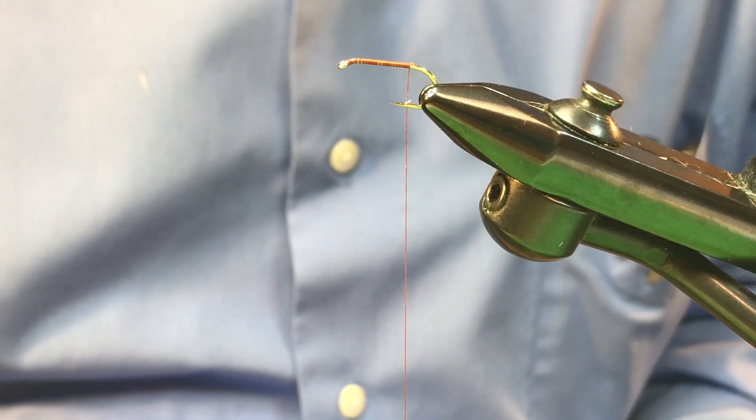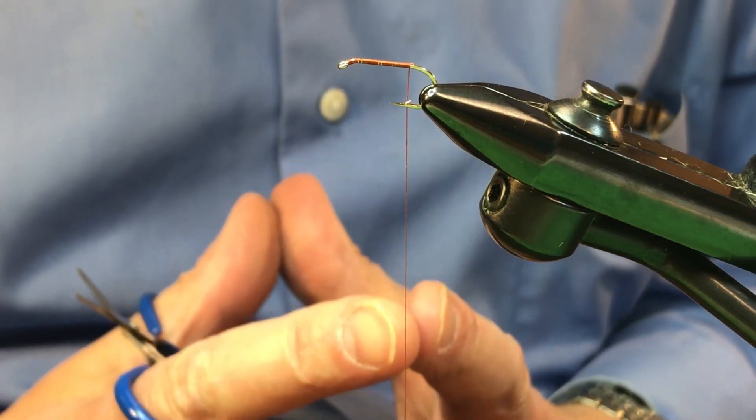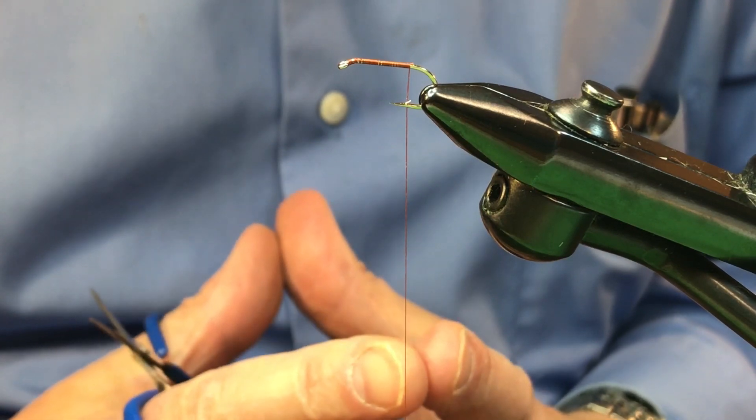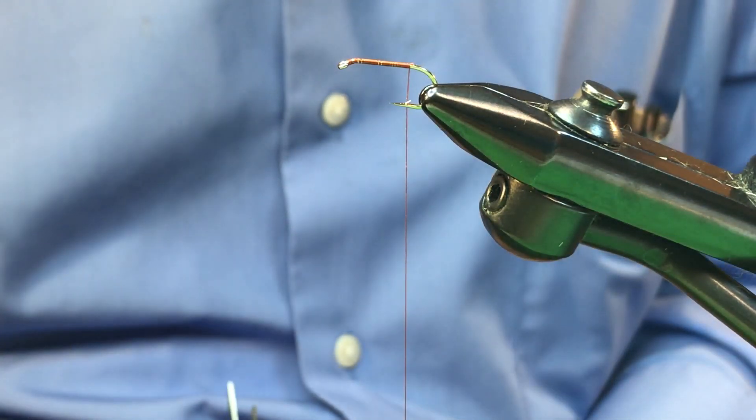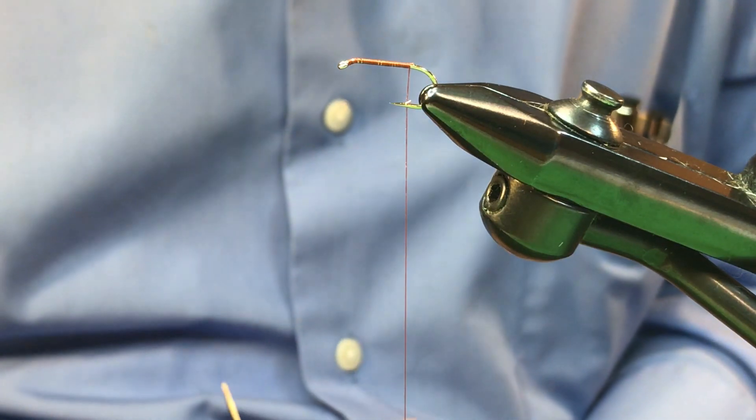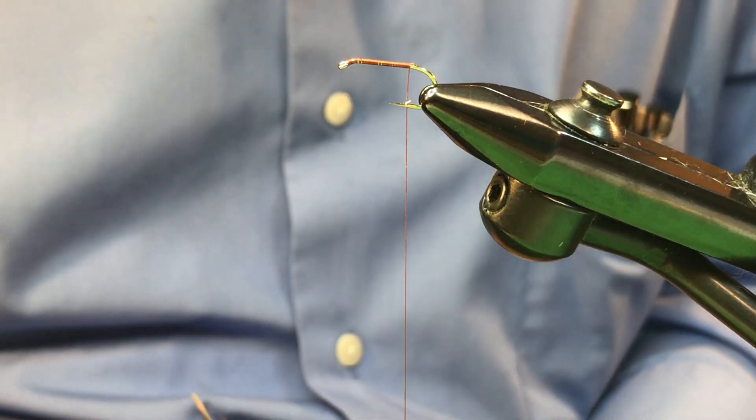Welcome to Tying Michigan's Best Trout Flies. Today I'm going to do a tutorial on the easiest method I've ever found to apply dubbing to the thread and then to the hook. Putting it on the thread is the key part. Wrapping it on the hook, there's not much to that.